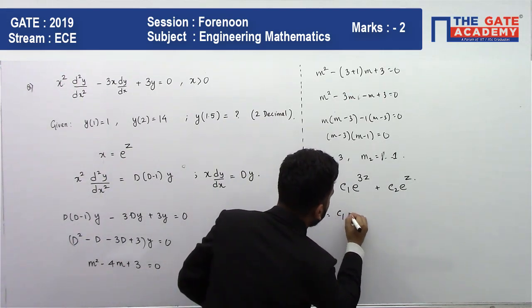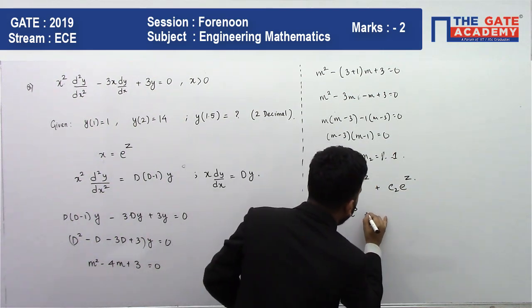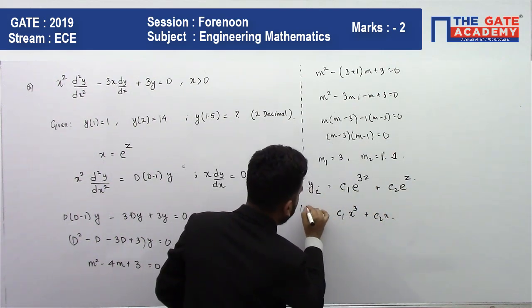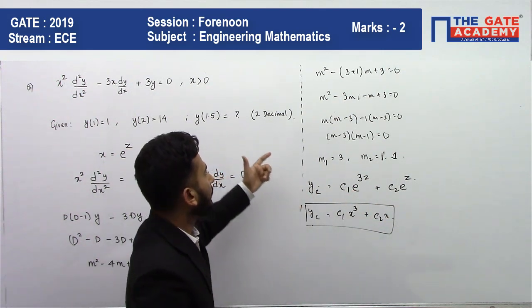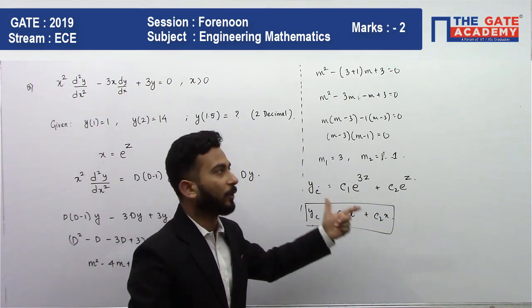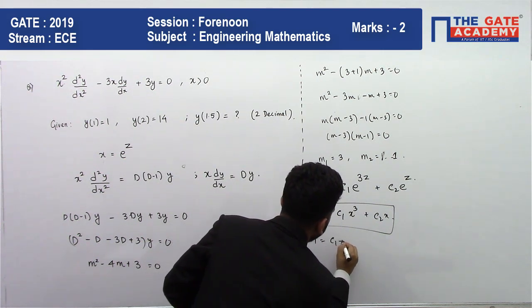Now, e^z you have taken as x, so I can write this as c₁x³ + c₂x. I have transformed it in terms of x.